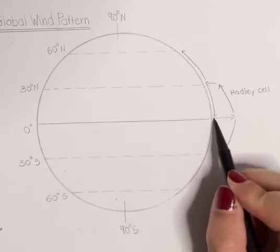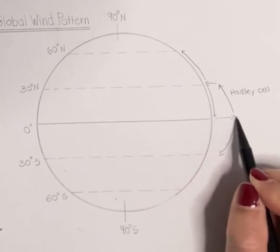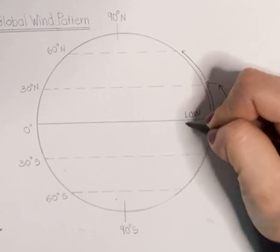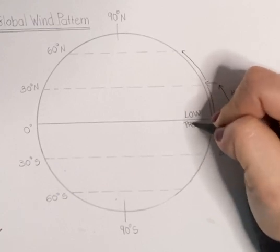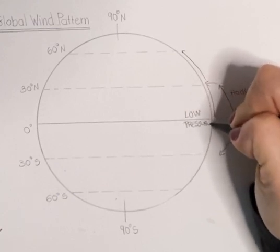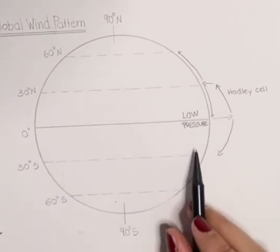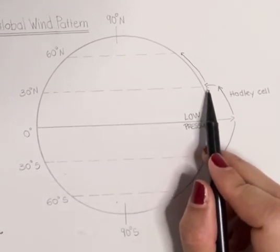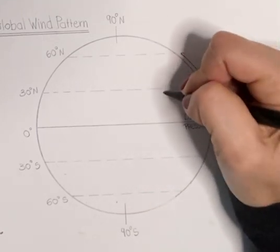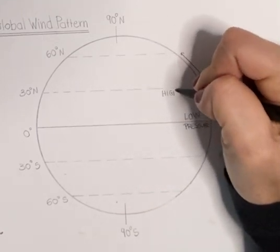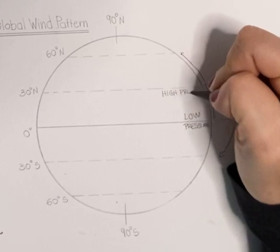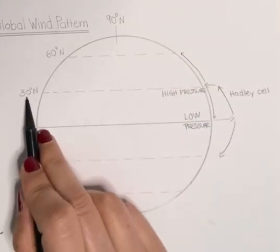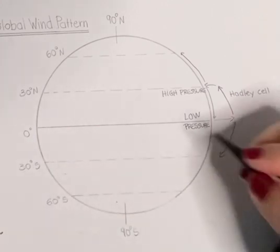Rising of warm, less dense air creates areas of low pressure at the equator. Cool, dense air creates areas of high pressure at 30 degrees north or south.